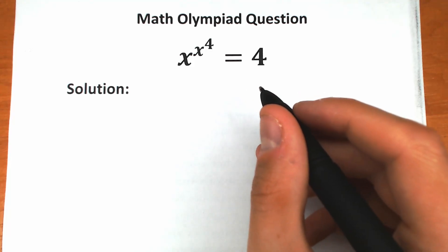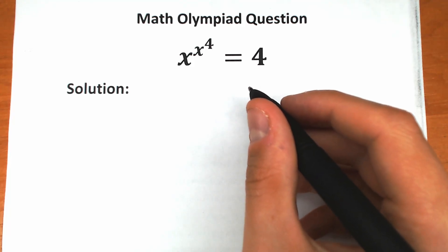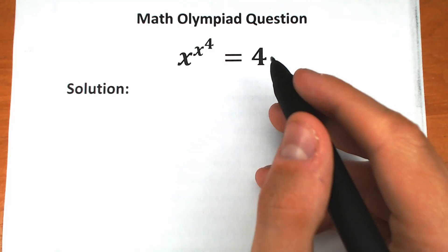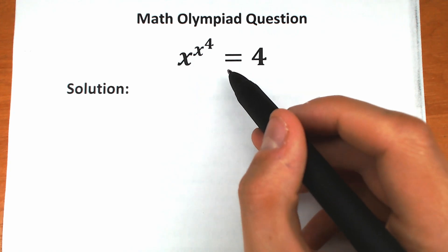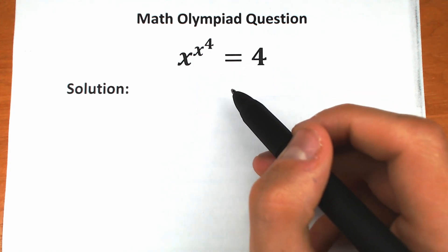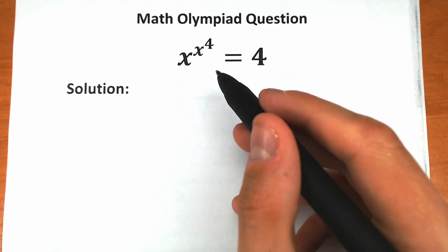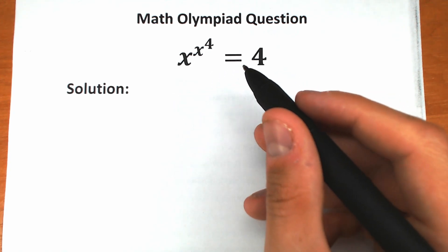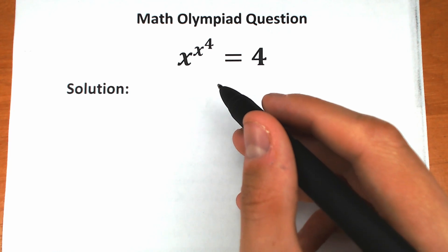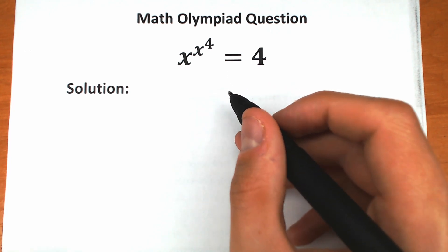Happy to see you here on my channel. I'm a semantics, and today we have a really interesting exponential equation: x to the power x to the power 4, equal to 4. Of course we need to find x in this really interesting challenge. In this video I'm going to fully explain how I'm going to do this correctly, step by step.